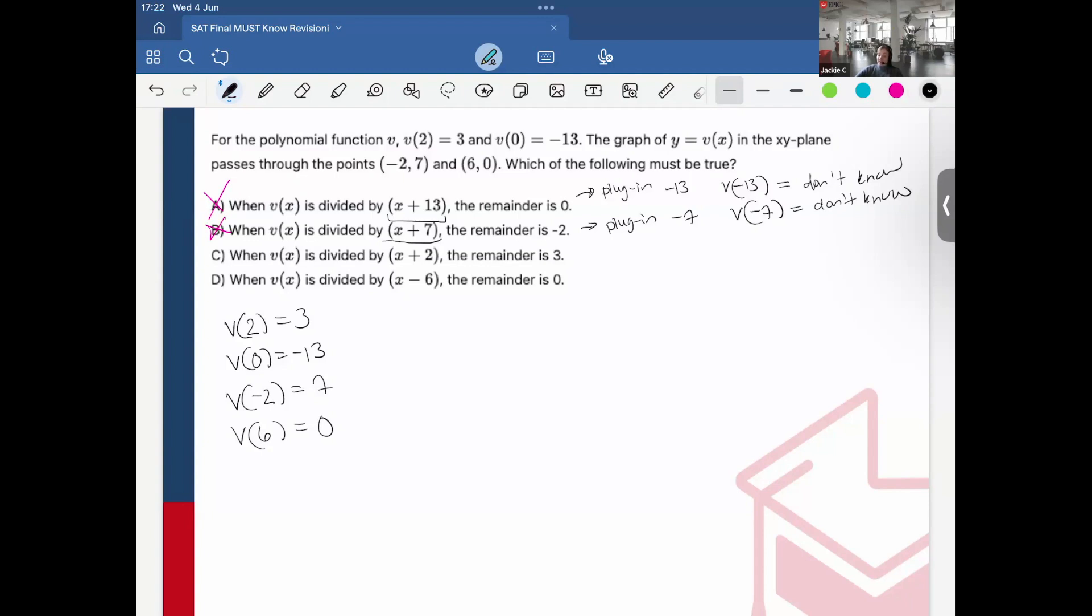C, when v(x) is divided by x plus 2, the remainder is 3. So here, if I have the function, I would plug in negative 2. Oh, but here I do have that negative 2 has an output of 7.